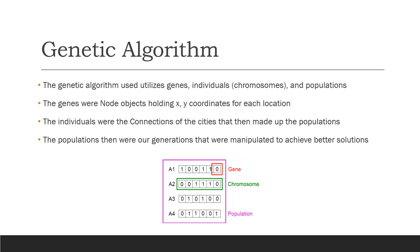What is the genetic algorithm? Genetic algorithms utilize genes, individuals or chromosomes, and populations to mimic natural selection. For mine, the genes were the node objects holding XY coordinates, graphical XY coordinates, and distances for each location. The individuals or chromosomes were the connections of the cities that made up the populations. The populations were our generations that were then manipulated using several functions. Here you can see a gene is just one section of a chromosome or individual, and a group of individuals make up the overall population. Instead of ones or zeros as in binary, we would have the names of our cities or nodes, typically just the numbers they were assigned in the file.